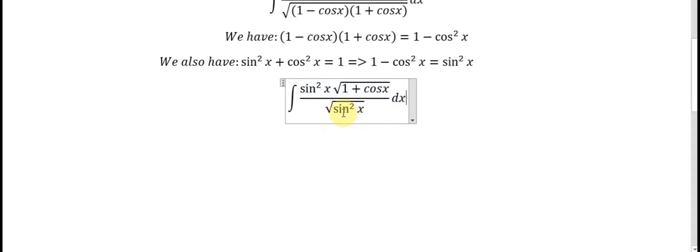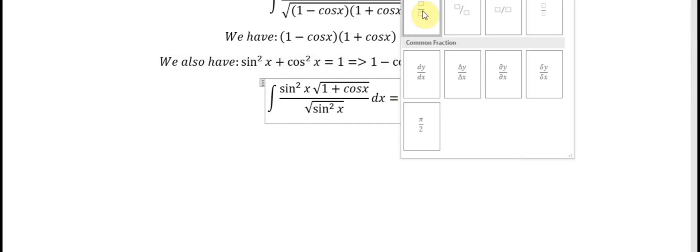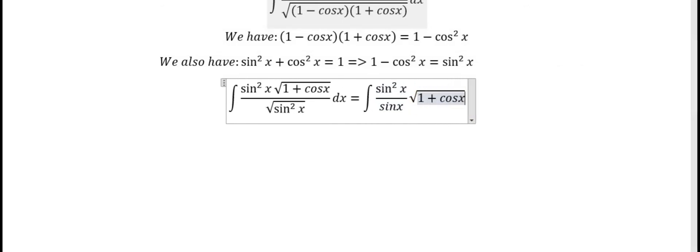The numerator becomes sine squared s times the square root of 1 plus cosine s. The denominator square root of sine squared s gives us sine s. Now we simplify sine s with the sine s in the numerator.